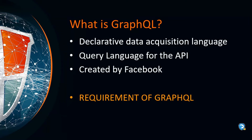GraphQL is a language specification defined by Facebook to describe business-related data models and provide implementation in multiple programming languages. It is a query language for APIs and a runtime for fulfilling those queries with your existing data. Basically, it is used to load data from the server to the client application in a much more efficient manner than traditional methods and services.